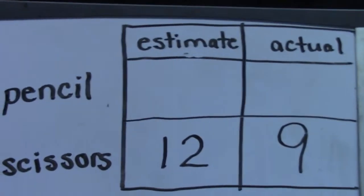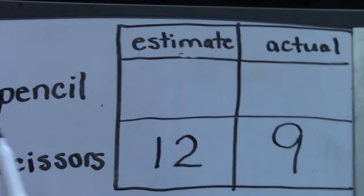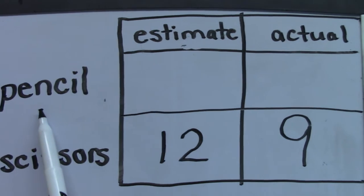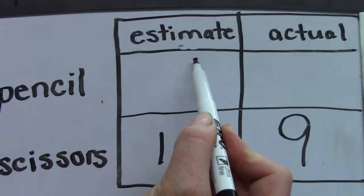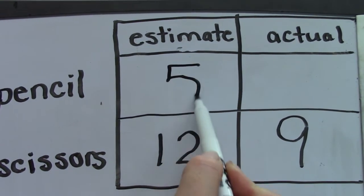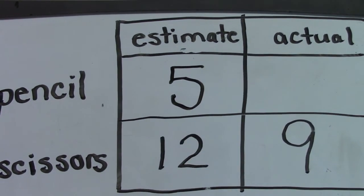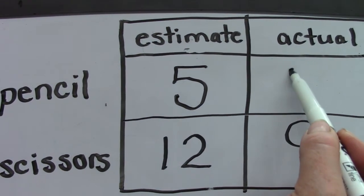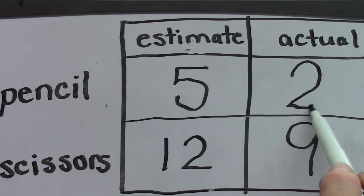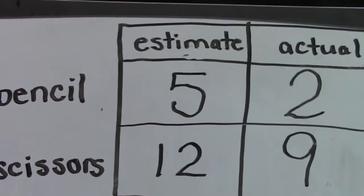Let's take a look here on my board for pencil. I estimated that we would need five tiles. Hmm, I was not right though. I thought too many. The actual weight was two.